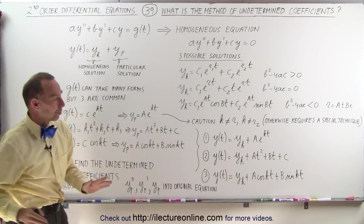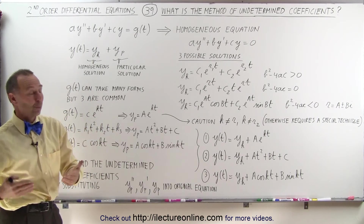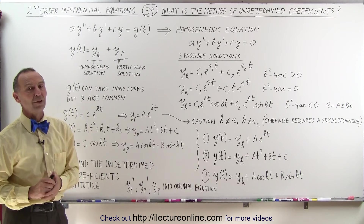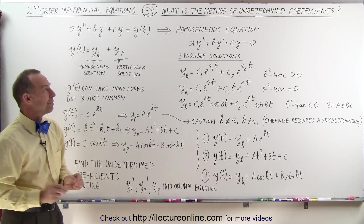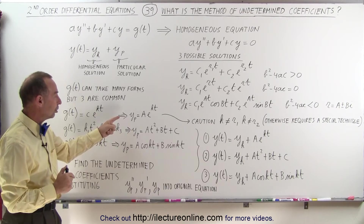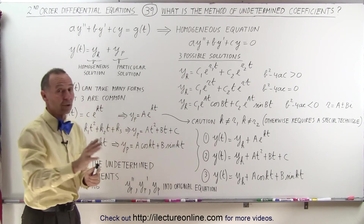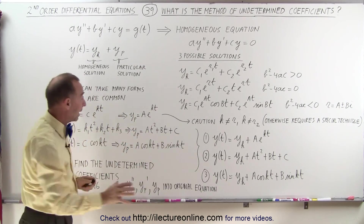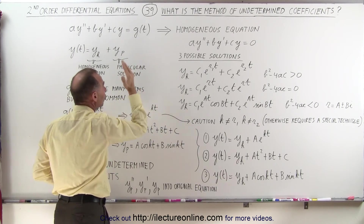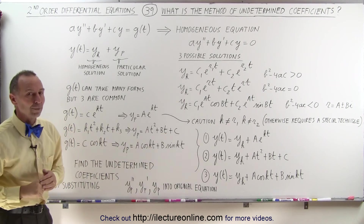We'll show you examples of how to actually do that in each of these three cases, and furthermore with all kinds of different combinations as well. That's what we mean by the method of undetermined coefficients — we find the particular solution, we know what the general format should look like because it will look very similar to the given function, we just don't know the coefficients, and then we determine them.